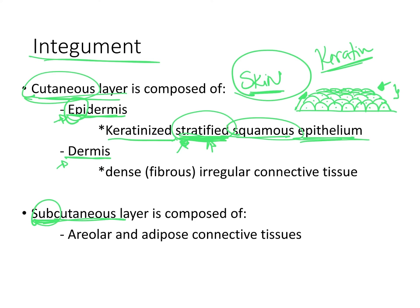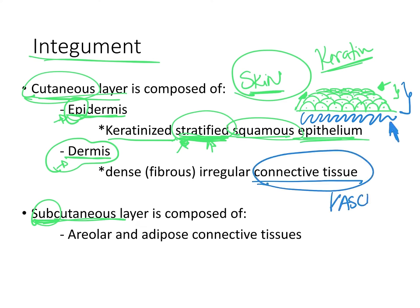The layer underneath the epidermis, the dermis, is not epithelium — it is connective tissue. Epithelium does not have blood vessels because the cells are very tightly packed together, leaving no space. Those epidermal cells receive their nutrients from the underlying connective tissue. Consequently, the dermis is connective tissue, which is vascular, so we do have lots of blood vessels in the dermis.